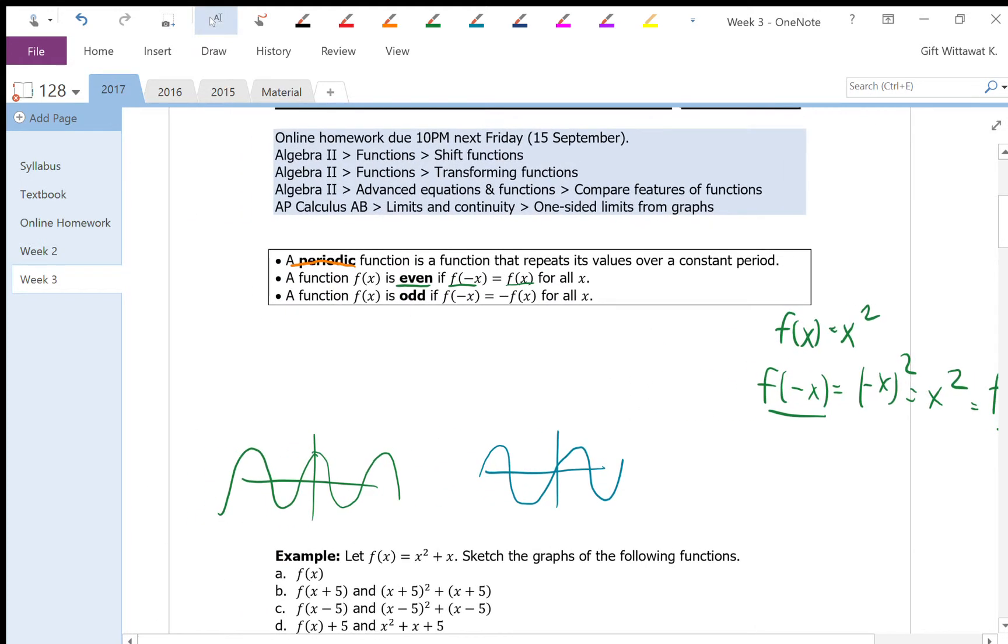If you plot the graph of the even function, so this is the graph of x squared, this is the graph of cosine of x. So what happens when you look at the even function is that they will be symmetric over the reflection across the y-axis.